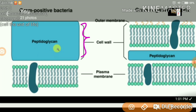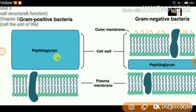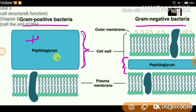Let's compare these two. This is gram-positive and this is gram-negative. The blue-colored region is peptidoglycan — you can see it in both. In gram-positive bacteria, the peptidoglycan cell wall is thick. But in gram-negative, it is thin. That is the first difference between these two.